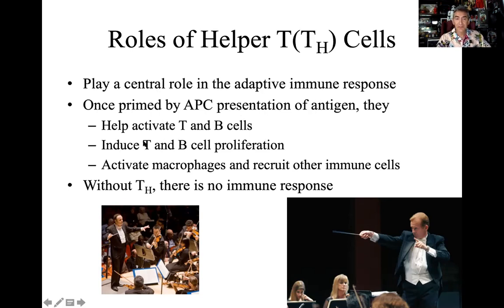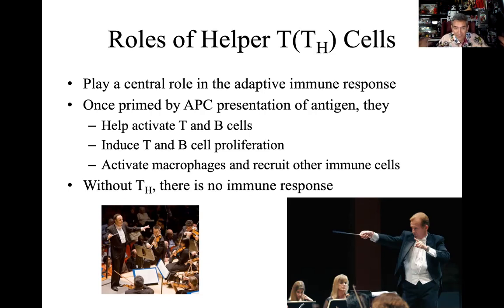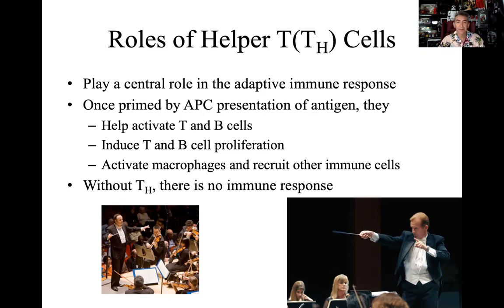Helper T cells orchestrate both cell-mediated and humoral responses, inducing T and B cell proliferation. This is very significant: without helper T cells, there is no immune response. It's like having all the musicians but without a conductor — nobody plays. Helper T cells are absolutely critical in establishing the immune response. Integration of B and T cell lines allows for synchronicity, communication, and overlapping branches of the immune system.